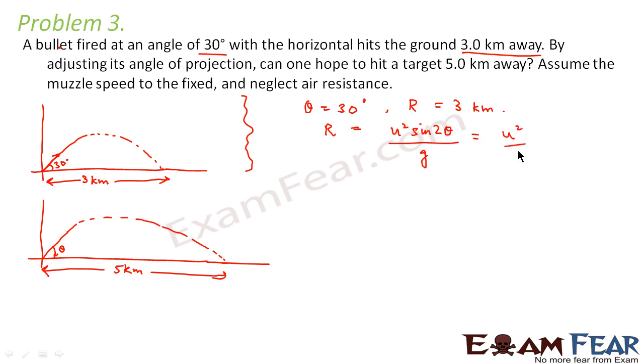Here we know theta. So this will be u squared by g sine 2 theta. Here theta is equal to 30 degree. So this is sine 60. So that means u squared by g and this will be root 3 by 2. So this is the value of the horizontal range which comes out in this case. Now the question says that this range is equal to 3 kilometers.